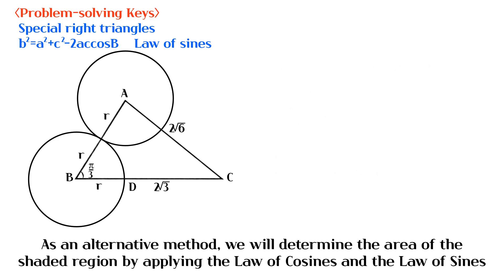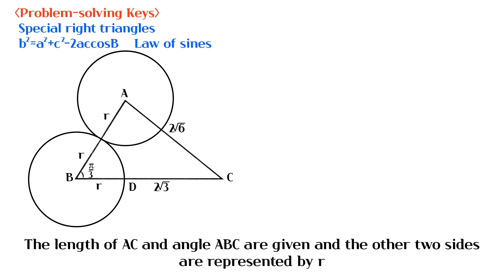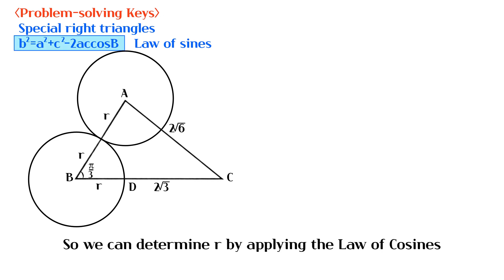As an alternative method, we will determine the area of the shaded region by applying the law of cosines and the law of sines. The length of AC and angle ABC are given, and the other two sides are represented by r. So we can determine r by applying the law of cosines.